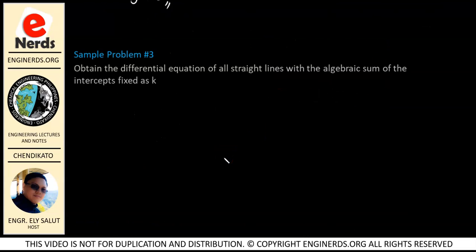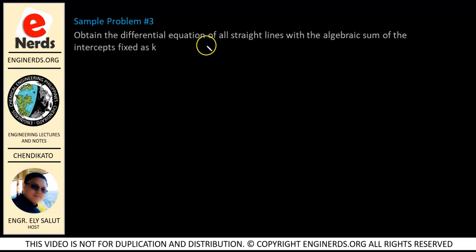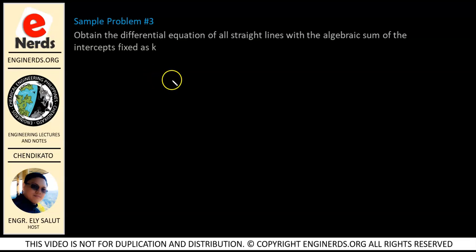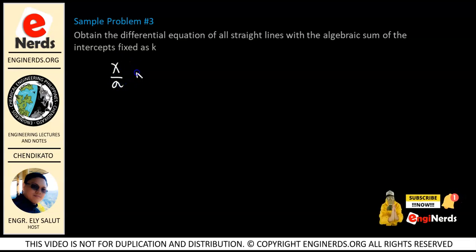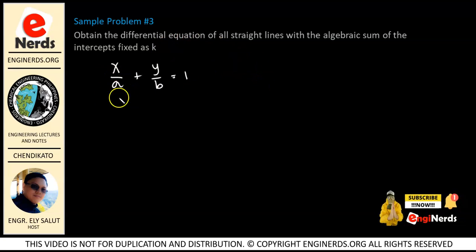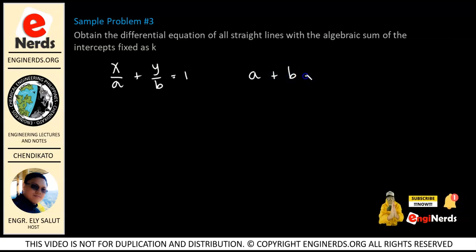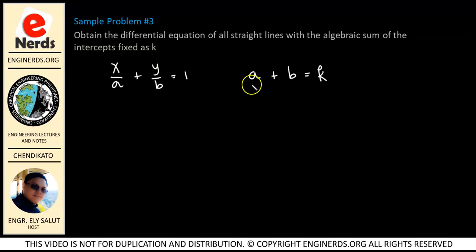For Problem 3, we need to obtain the differential equation of all straight lines with the algebraic sum of the intercepts fixed as k. Using our line in intercept form x over a plus y over b equals 1, we are told the sum of intercepts a and b equals a fixed value k. So in order to solve this, we isolate one variable: b is equal to k minus a.